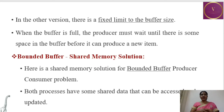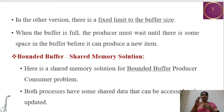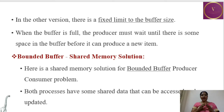In the other version, there is a fixed limit to the buffer size. When the buffer is full, the producer must wait until there is some space before it can produce a new item. The buffer size is fixed, so when the upper limit is reached, the producer cannot produce — it has to wait until there is space. This is the bounded buffer problem, and shared memory is the solution. There is a shared memory solution for the bounded buffer producer-consumer problem, where both processes have shared data that can be accessed and updated.